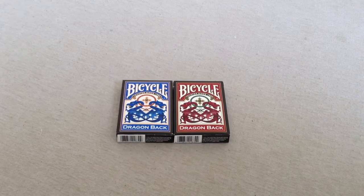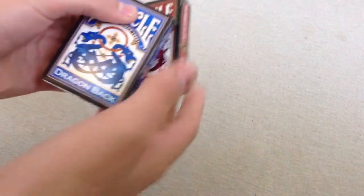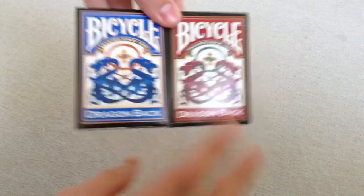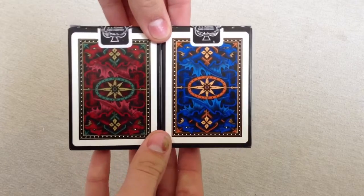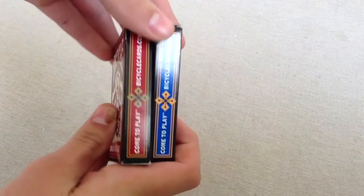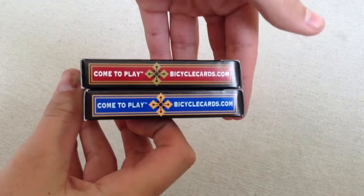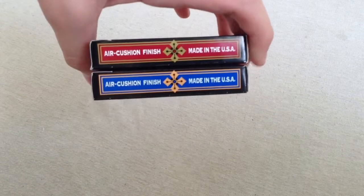Alright, so next we'll take a look at the boxes. Here is the front. The backs have the back design of the cards. The side, bicycle.com, come to play. Air cushion finish, made in USA.